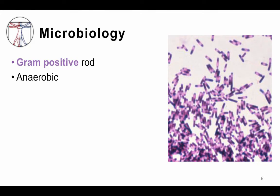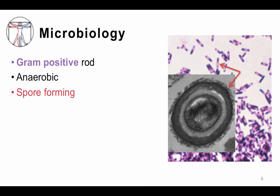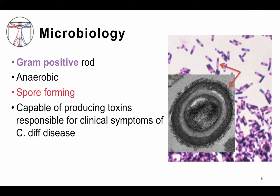C. diff is anaerobic, and one of the hallmarks of C. diff pathogenesis is spore formation. You can actually see the spores on the gram stain in the areas of lighter purple, which is kind of cool. Spores are ingested by the fecal-oral route and are extremely hardy in the environment. Toxin production is also a key feature of the disease. Other clostridia, such as Clostridium tetani, which is the causative agent of tetanus, or C. botulinum, which is the causative agent of botulism, also produce spores and toxins.